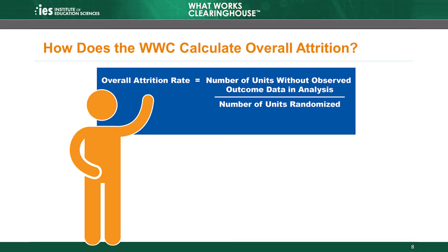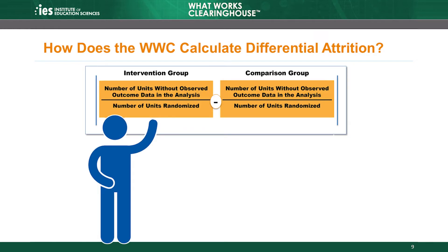Next, let's take a closer look at how the WWC calculates overall and differential attrition and walk through an example. The overall attrition rate is simply the number of units without observed data in the analysis divided by the number of units that the study randomly assigned. To calculate differential attrition, the WWC uses the same approach but does the calculation separately for the intervention group and the comparison group. Then, after calculating attrition for each group, find the difference between the attrition rates for the two groups. Take the absolute value of that difference to get the differential attrition rate.